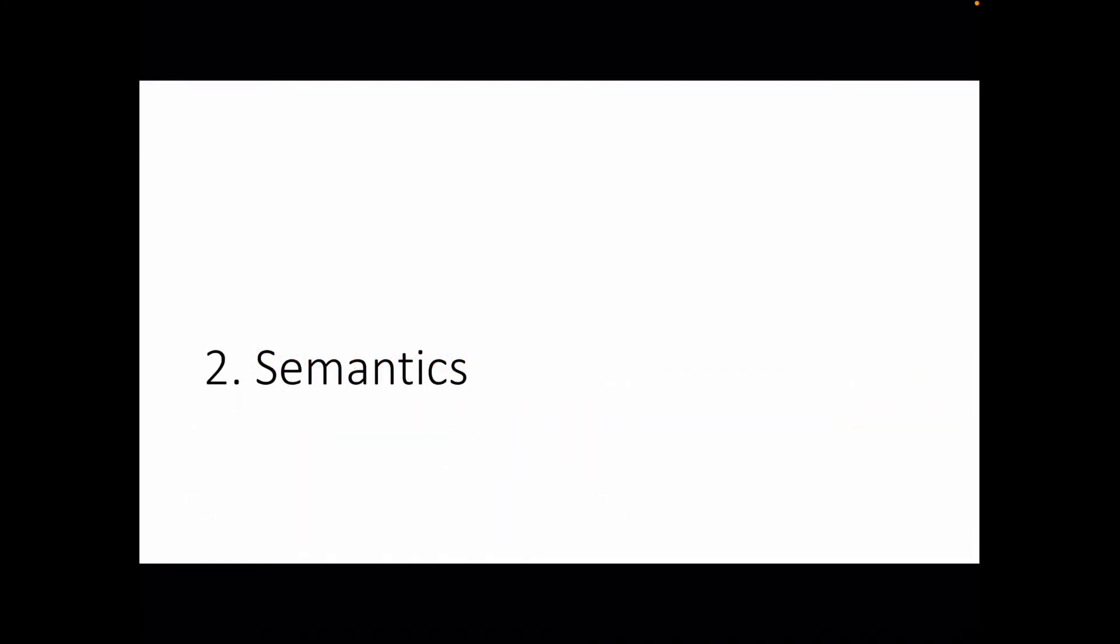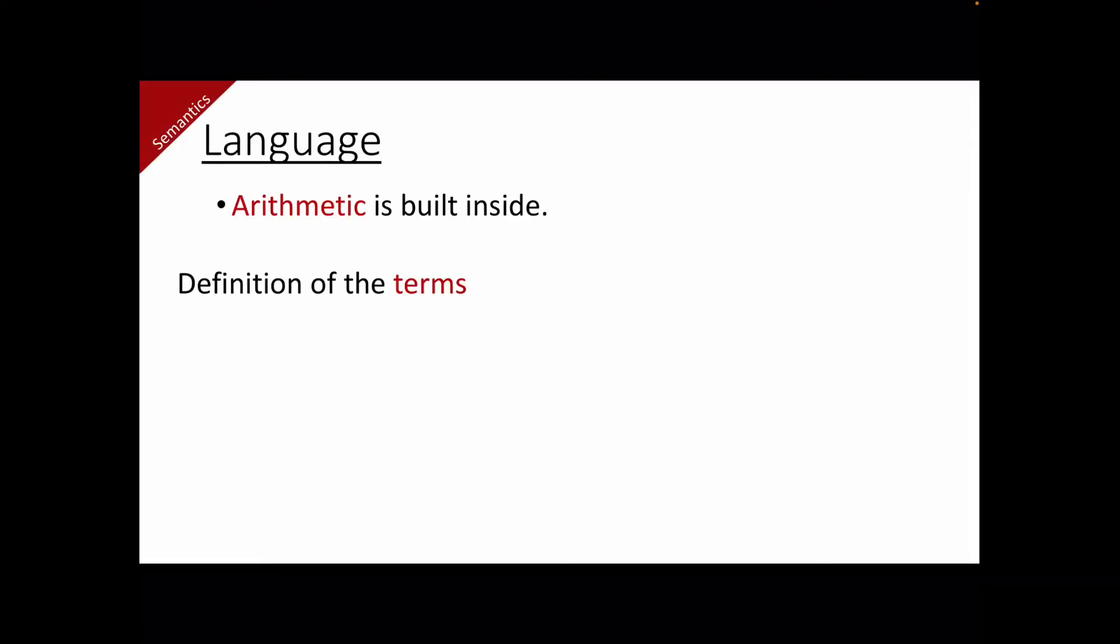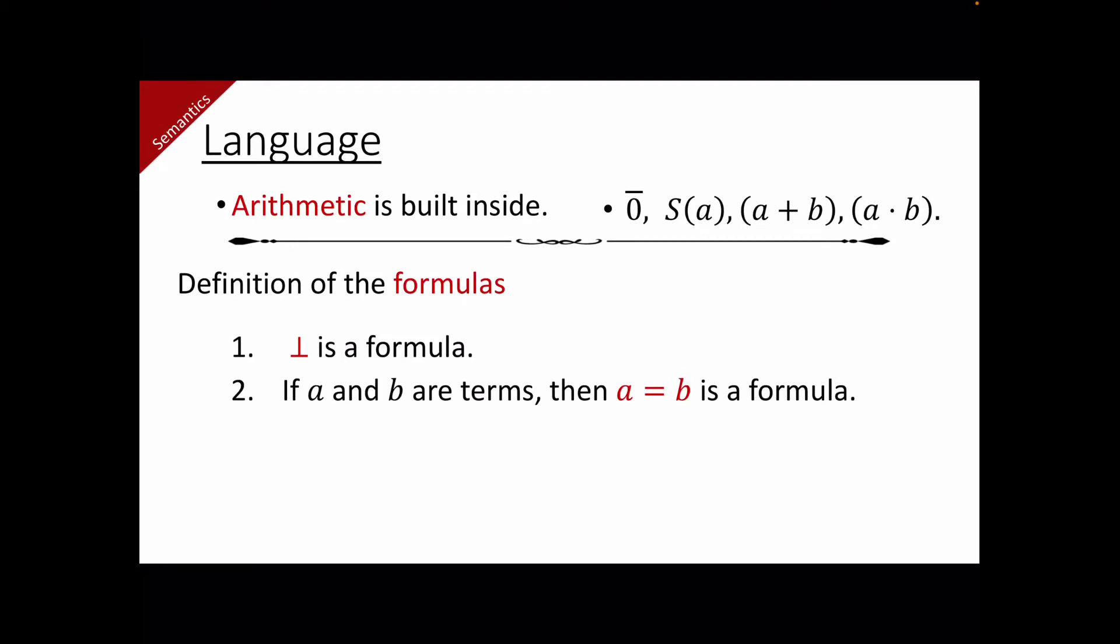Now, let us see the semantics of the logic. We will start with the language. But since strict finitism is a finitistic standpoint, which is about numbers, we have arithmetic built inside. So we start with the definition of the terms. 0 is a term. And if a and b are terms, then the successor of a and the sum and the product of a and b are terms. We use these to define the formulas. Bottom is a formula. And if a and b are terms, then the equation between them is also a formula. And these are the atomic formulas for us. The rest is as usual. We have conjunction, disjunction, implication, and negation.